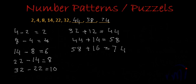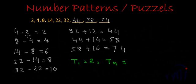Now, what about the generalized form of this pattern? That is also very easy. T1 is equal to 2. And what about Tn? When finding the second term, you are adding 2 to the first term. The first term plus 2 gives the second term. And the second term plus 4 gives the third term.